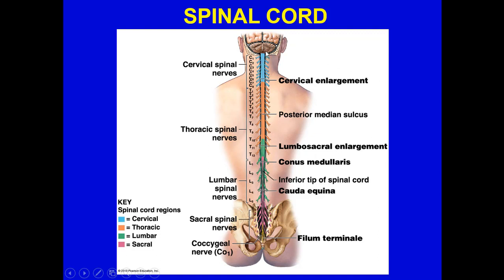Looking at the diagram, you can see the cervical spinal nerves and cervical enlargement, with nerves traveling into the upper limbs. The lumbosacral enlargement processes nerves for the pelvic area and lower limbs. After the conus medullaris — the cone-shaped structure — you have the cauda equina. The filum terminale is unique fibrous tissue keeping everything secure so the cord doesn't bounce around. Moving from cervical to thoracic, lumbar, sacral, and eventually the coccygeal nerve can all be identified.